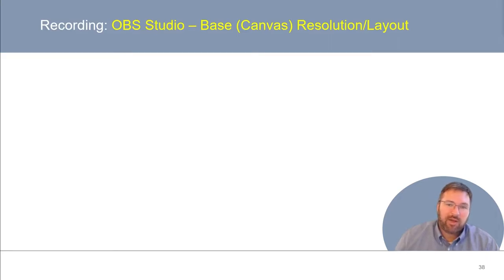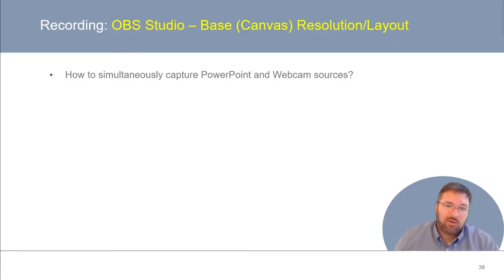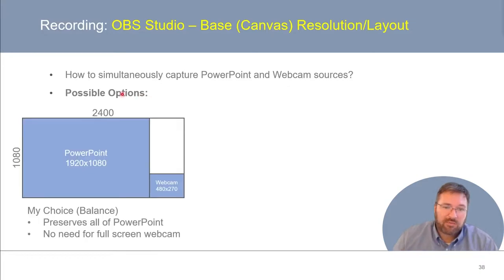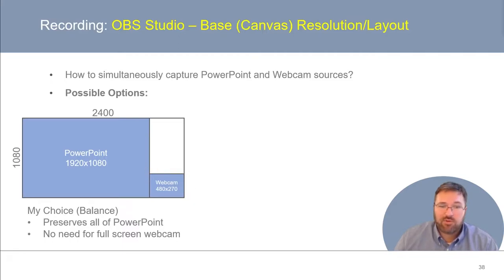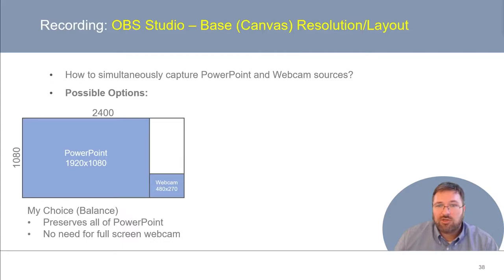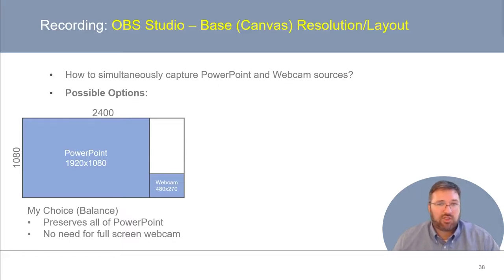Let me take a quick second to talk about the base canvas resolution layout. We need to make sure OBS is set up correctly to capture our PowerPoint and webcam sources separately. For my videos, I'm using a base canvas resolution of 2400 by 1080p. This is big enough to include screen capturing my PowerPoint presentation at 1920 by 1080p, as well as my webcam, which I've scaled down to 480 by 270. I chose this setup to preserve all of the PowerPoint slide and give me control of where and when I place my webcam footage later on in editing.